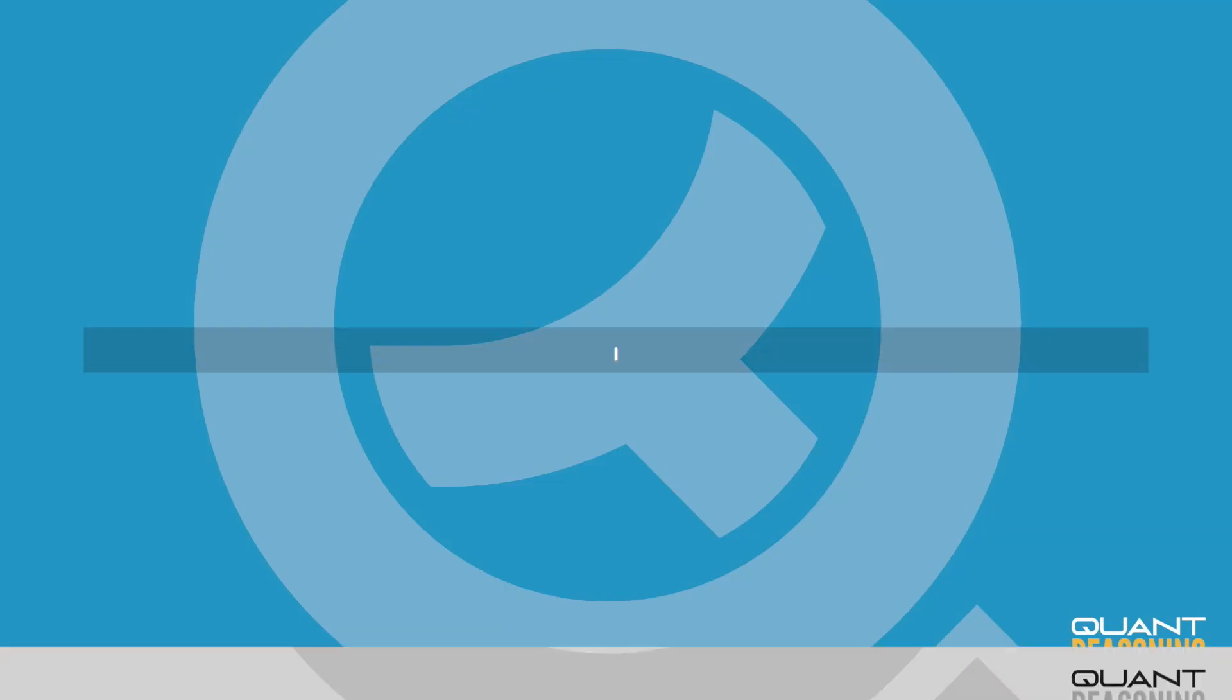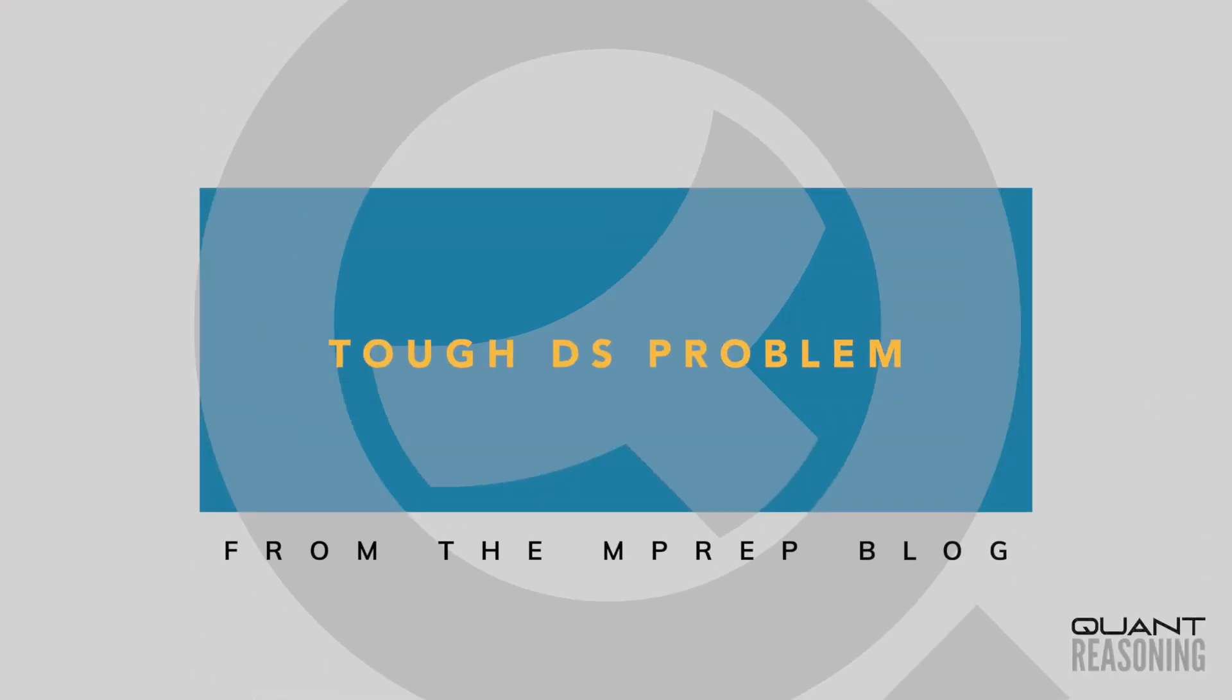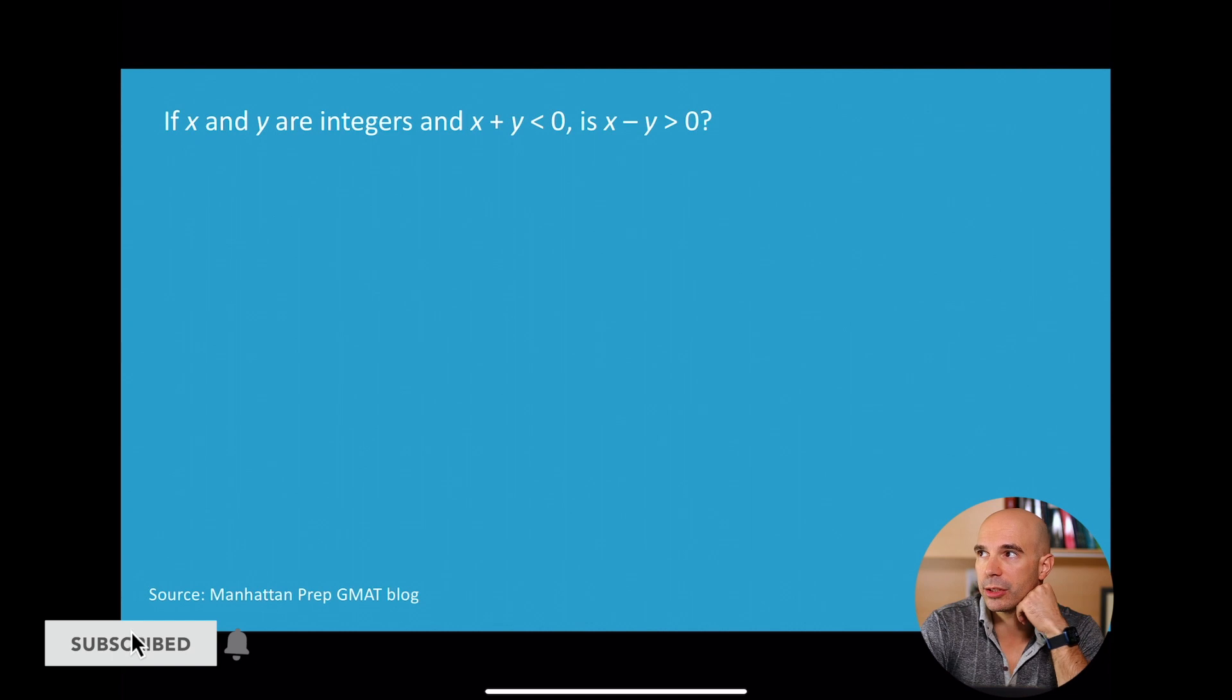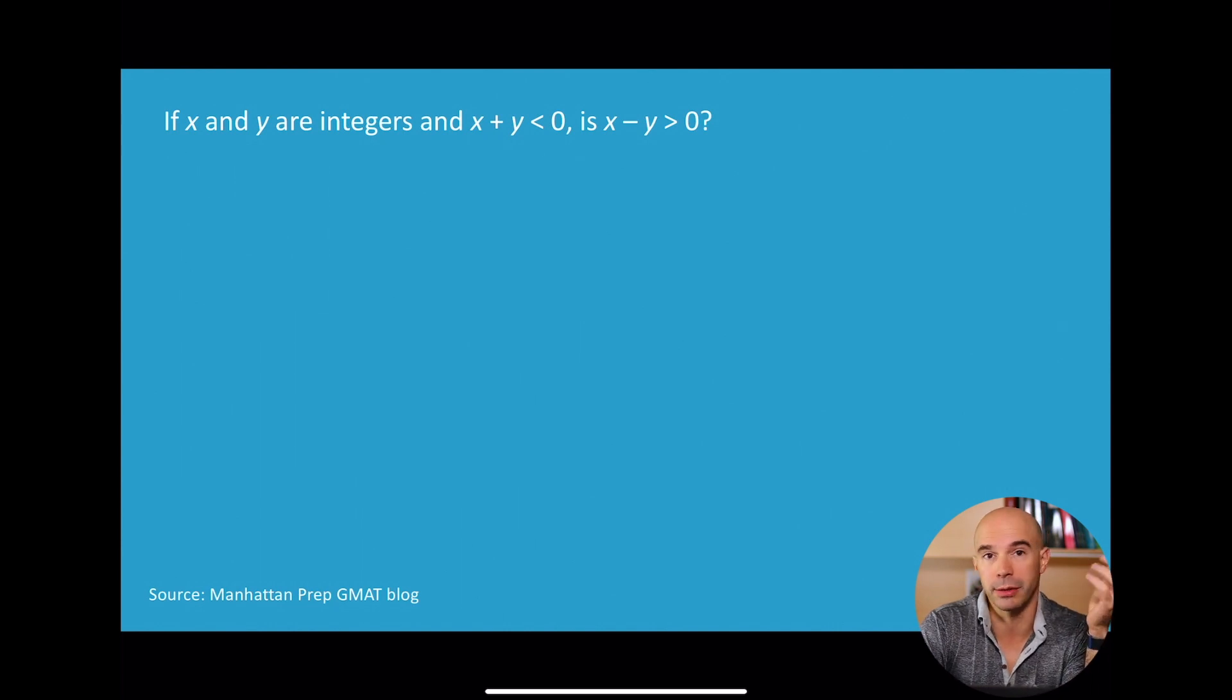I think this is a question from the Manhattan Prep blog, and I'm not showing you the statements yet. This is a data sufficiency question. We can see the question on the slide. I don't want to look at the statements just yet because I want to think together about what we can infer from the free info. And in general that's what you want to do in real life. You don't want to jump to the statements. You want to first really take the time with the free info, especially when there's so much of it.